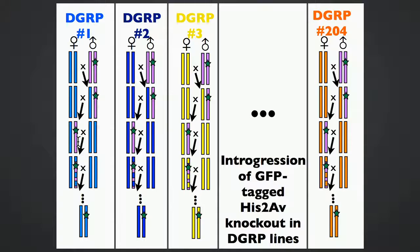In reality, at the end of this process, only about 150 of the lines survived after the 15 generations of backcrossing.